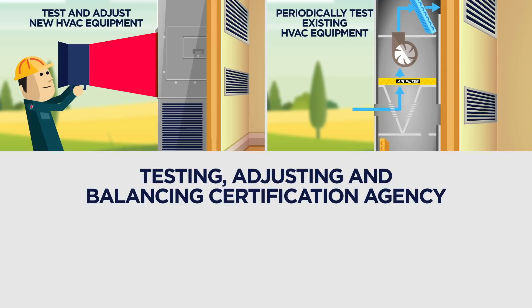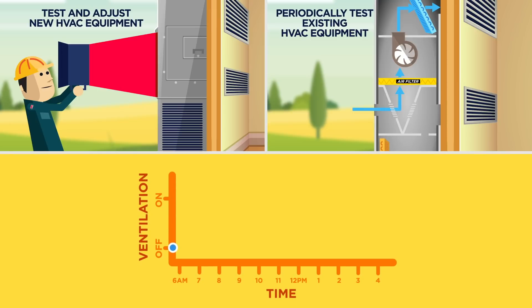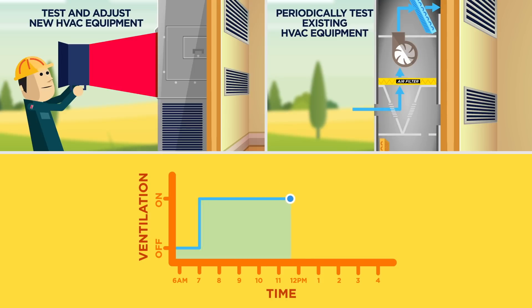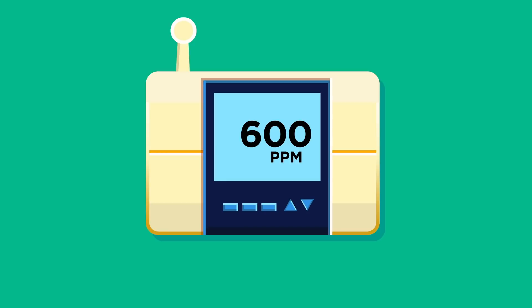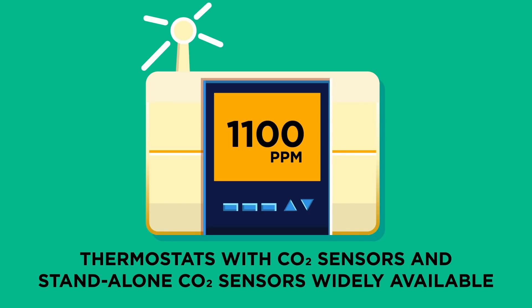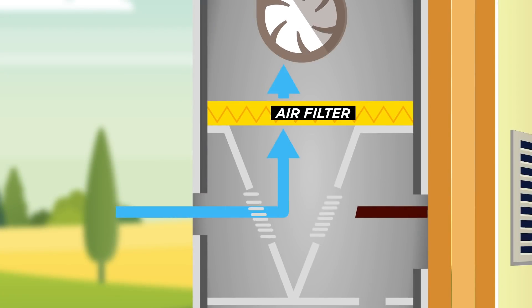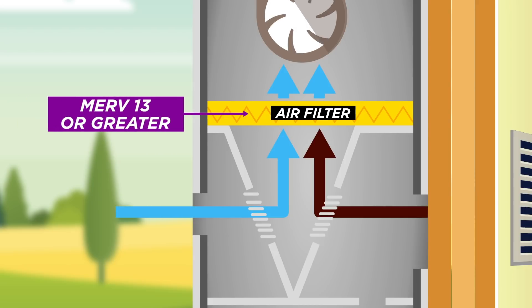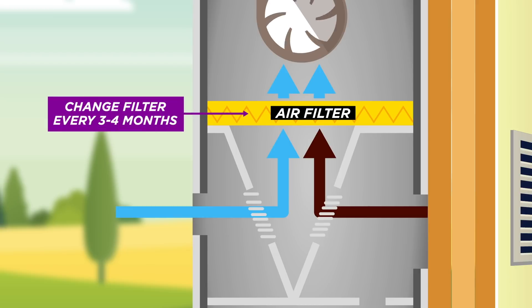Hire contractors and technicians that are certified by a testing, adjusting, and balancing certification agency. Ensure that building control systems and thermostats are programmed to operate ventilation fans one hour before school starts and continuously during the school day. Inform teachers on the importance of operating ventilation fans continuously. Install sensors in classrooms to continuously monitor CO2 levels and detect potential ventilation problems. Thermostats with integrated CO2 sensors and standalone sensors are widely available. When possible, use filters with a minimum efficiency rating value, or MERV, of 13 or greater to remove small particles from the air. Change filters every three to four months during the school year so that airflow is sufficiently maintained.